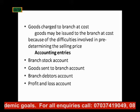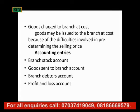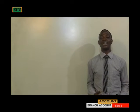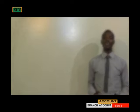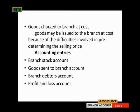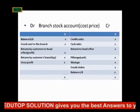The third ledger is the branch debtors account. You must be grounded in control accounts because the same way you prepare the control account is how you prepare the branch debtors account. This tells us that the branch also has credit sales, and customers owe the branch. The fourth ledger is the profit and loss account, which helps you know the performance of the branch. Those are the four ledgers we are going to prepare.